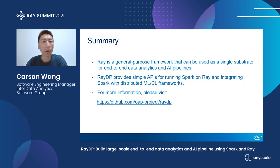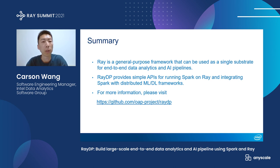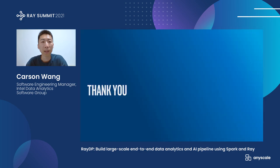Finally, let's give a brief summary. We first discussed some background of big data and AI, how people are integrating them and what are the common challenges in different setups. Then we introduced Ray, which is a general-purpose framework that can be used as a single substrate for end-to-end data analytics and AI pipelines. Then we also introduced RayDP, which provides simple APIs for running Spark on Ray and integrating Spark with distributed machine learning and deep learning frameworks. To get more information, please visit our GitHub repo. We welcome any feedback. Thank you very much.